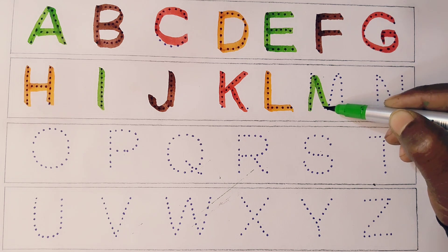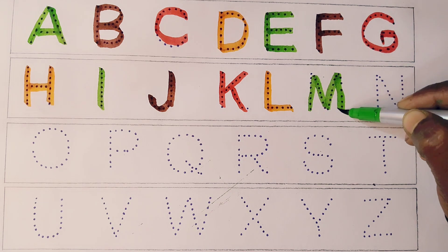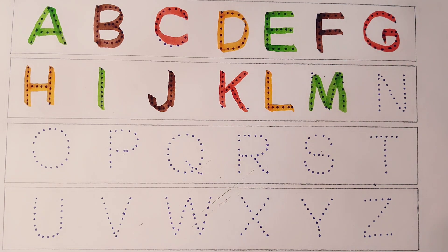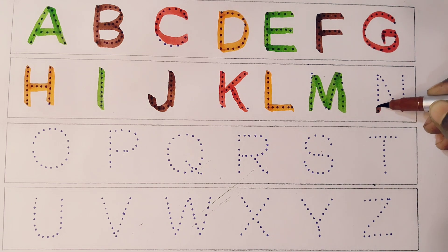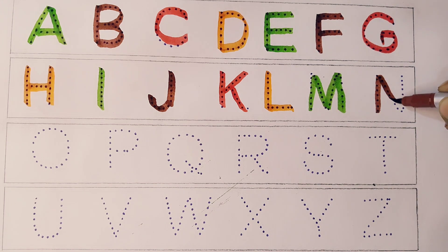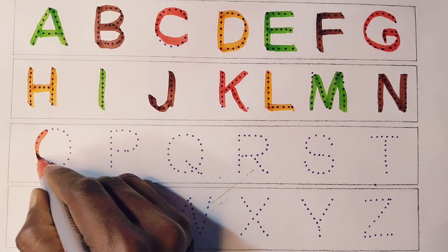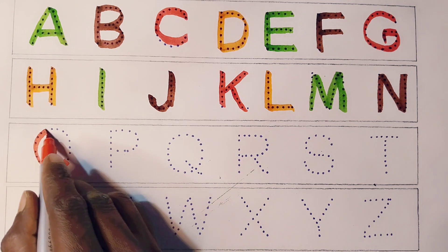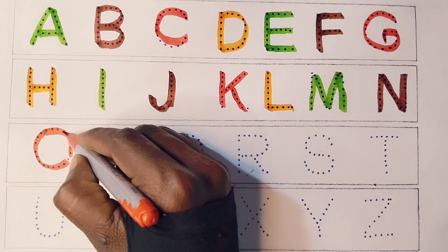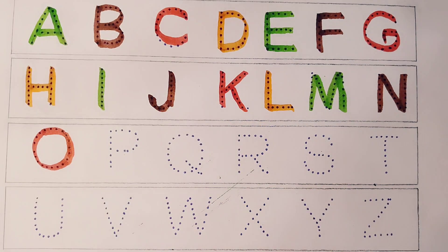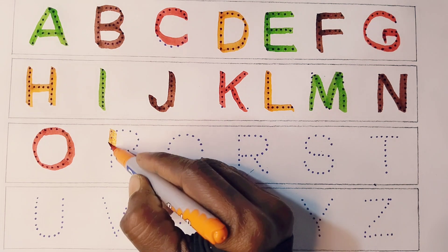M, M for mango, M for mango. N, N for nest, N for nest. O, O for orange, O for orange.